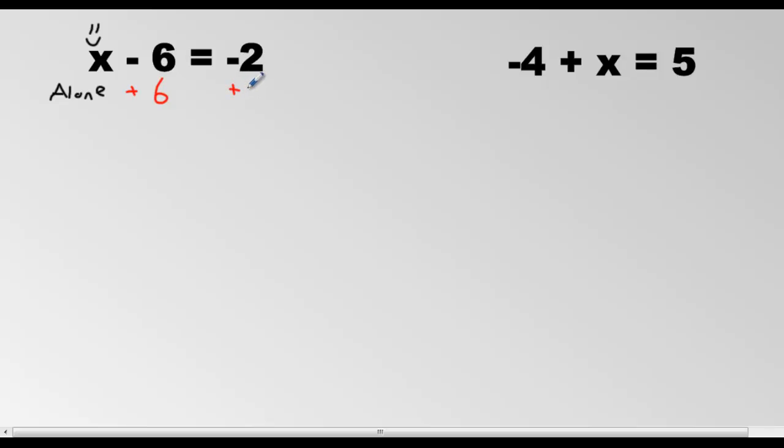And positive 6 on this side. Because what is that monkey like? Yeah, he likes to do. And negative 2 plus 6 is positive 4. We will drop the equal sign. Negative 6 and positive 6 is gone. And we have x equals positive 4.